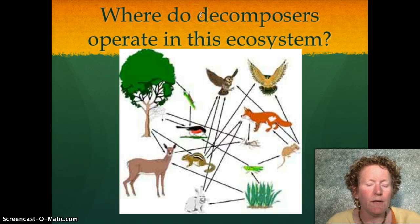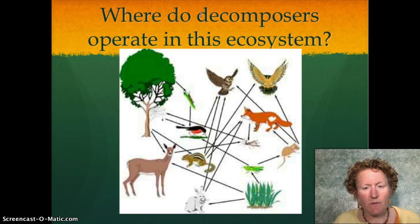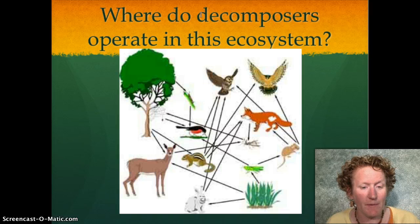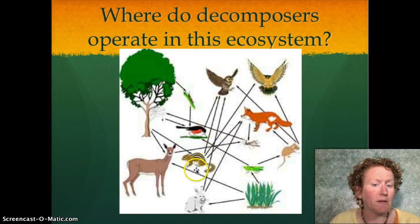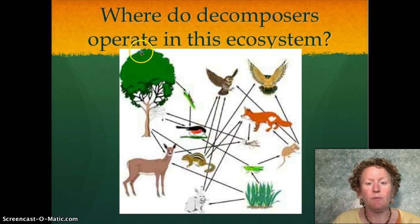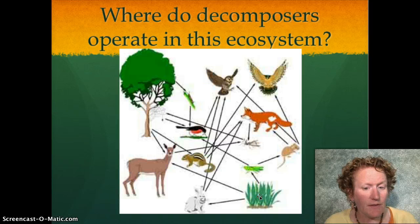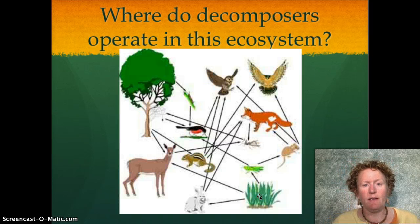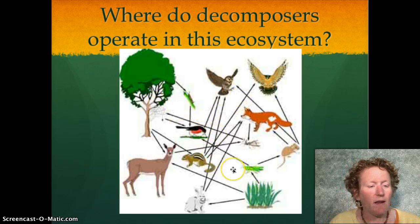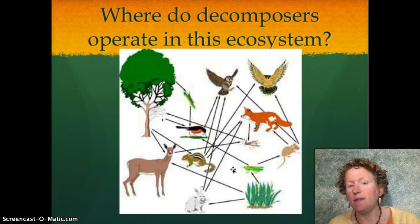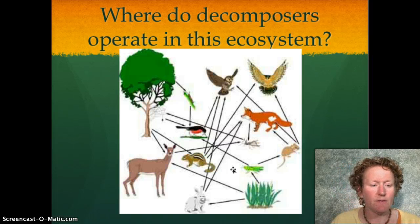Where do decomposers operate in this ecosystem? Decomposers eat dead stuff — at what level does dead stuff happen? Do chipmunks die? Do deer die? Do trees die? Do foxes die? Do crickets die? Does grass die? The answer is yes — all of those things die. So decomposers work at all levels. Remember that: decomposers work at all trophic levels. If you're dead, they'll eat it.